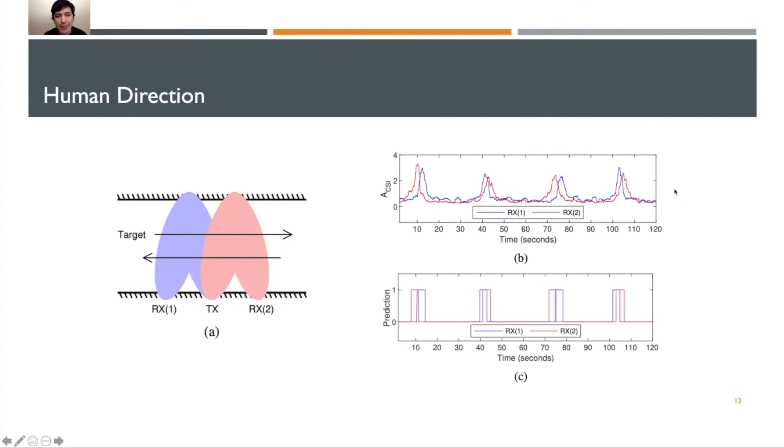Of course, this is our ACSI metric right here. And then down here is our binary prediction that we had made in the previous step. This shows which receiver was affected first and which one was affected second.